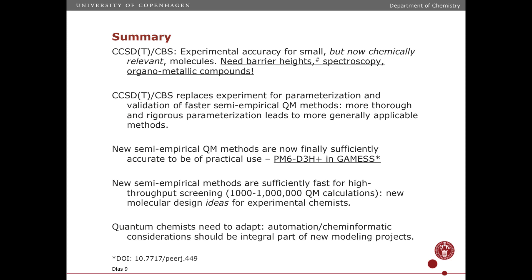These methods are now sufficiently fast that, for example, in our chemical shift calculations we're talking millions of calculations — DFT calculations on small systems. We can use quantum mechanics in a more automated, high-throughput way. This means quantum chemists have to learn some new things about how to automate and how to generate a diverse set of structures that include millions of different kinds of chemicals. We need to talk to our cheminformatics people, and these kinds of things should start to be an integral part of new modeling projects.